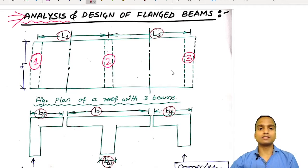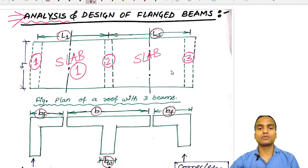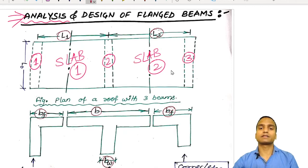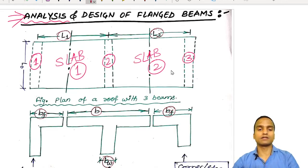These three beams are holding slab 1 over beams 1 and 2, and slab 2 over beams 2 and 3. We will discuss slabs and their analysis after a few more topics, but currently we will focus on the flanged beam only. What I have shown in the next figure is the cross section of this plan.